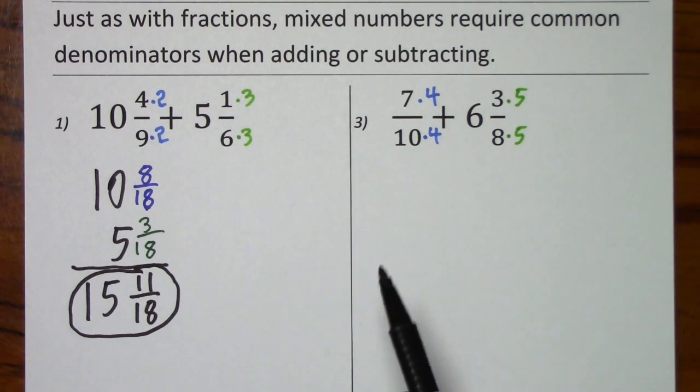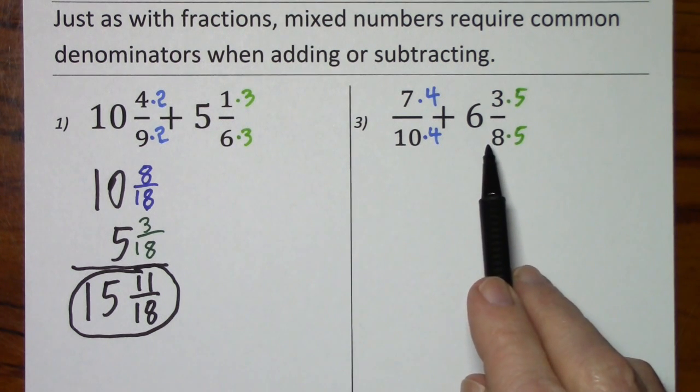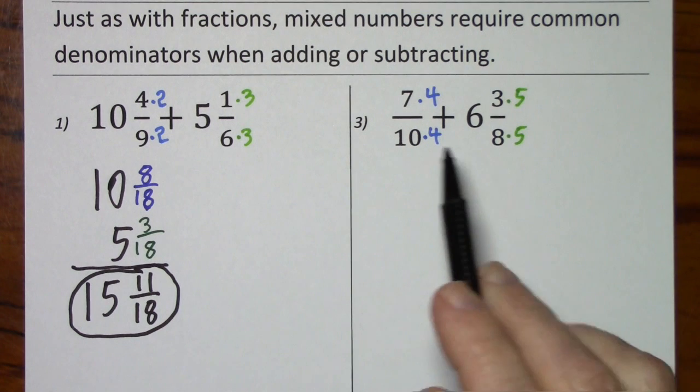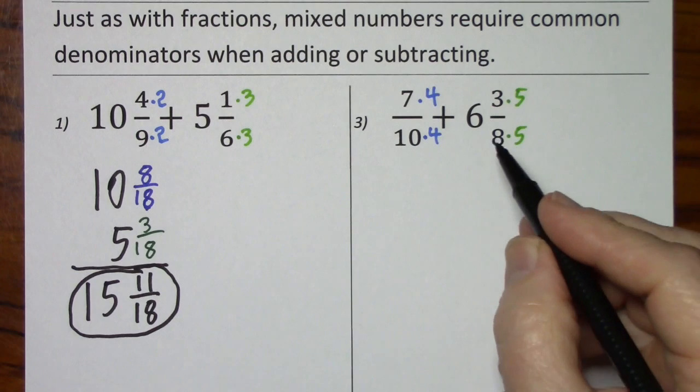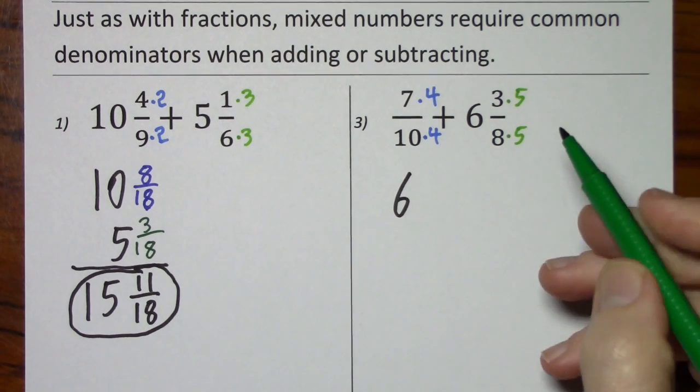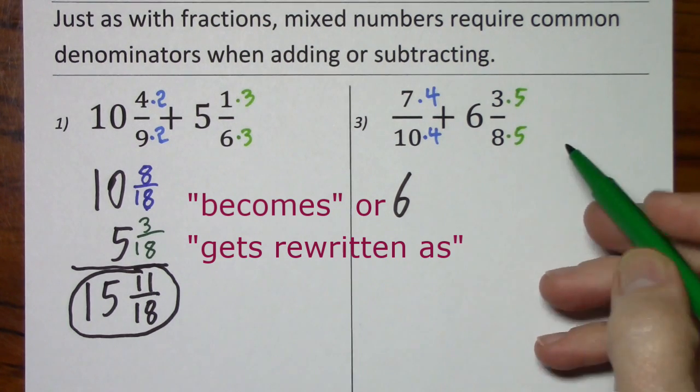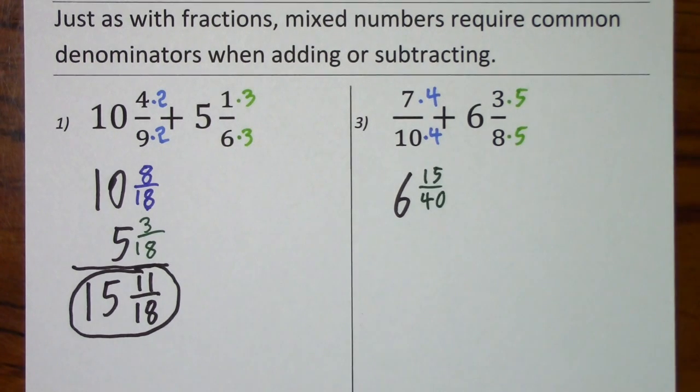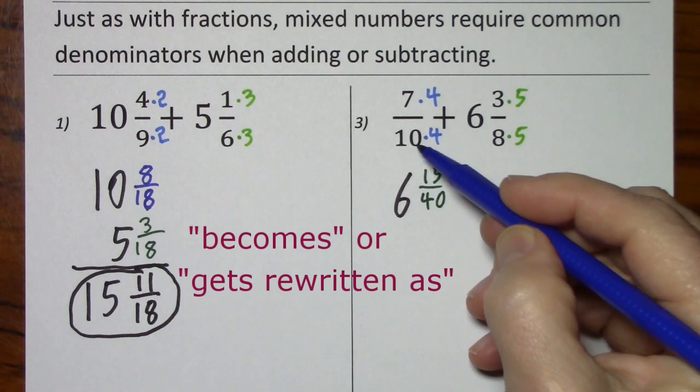The signs are the same, we'll be adding, but I like to put the largest number on top as a general rule. Since we're adding, it wouldn't really matter, but that's just how I prefer to set them up. So, 6 and 3 eighths becomes 6 and 15 fortieths.